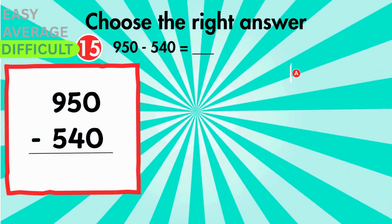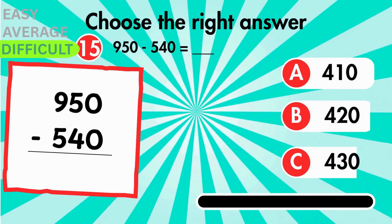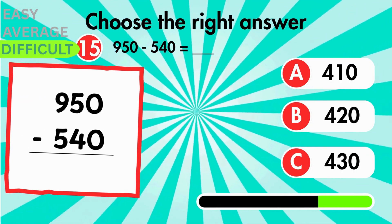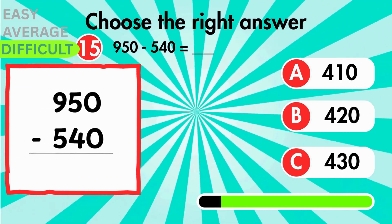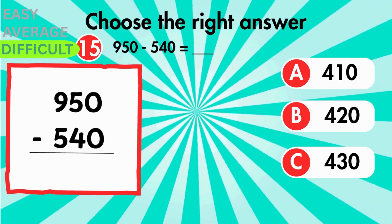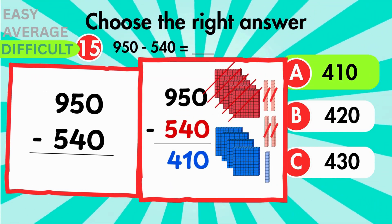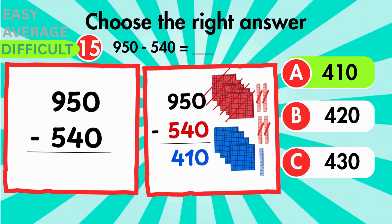Take away 540 from 950. What's the result? The result gives you 410.